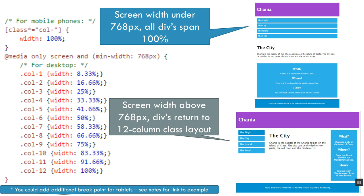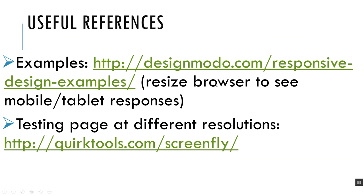You can add additional breakpoints for tablets in between — this example just shows two for simplicity. There are examples of responsive design using media queries available at a link in the slideshow. Also very useful is a tool to test pages at different resolutions: if you want to see what your page looks like on a mobile phone but don't have one available while designing, you can go to that website and it will show you what the page looks like at smaller sizes.